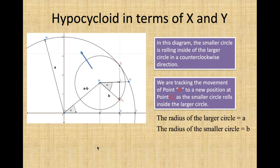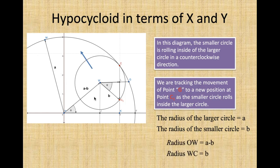The radius of the larger circle equals A, right here, and the radius of the smaller circle is equal to B. Radius OW equals A minus B, and the radius WC, WG, WC1 is equal to B.